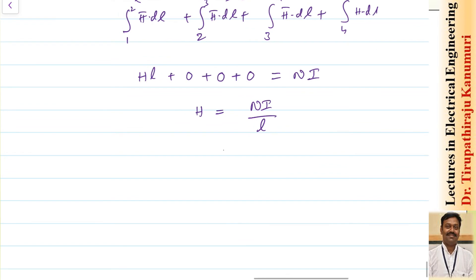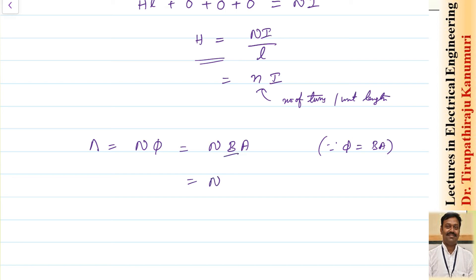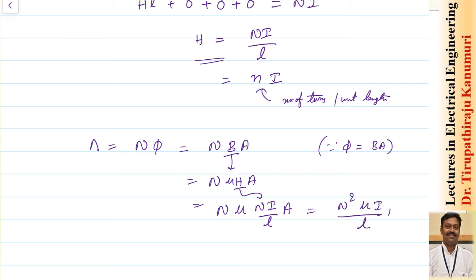This can be written as H equals n·I, where small n is the number of turns per unit length (N/L). Now calculating the flux linkages: flux linkages equals N times phi, where phi equals B times A. Since B equals mu times H, flux linkages become N into mu into H into A. Substituting H equals NI/L, flux linkages become N-squared times mu times I times A divided by L.